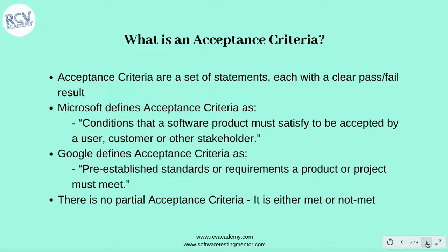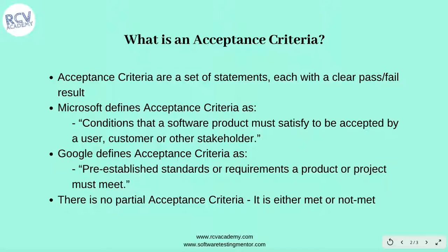Acceptance criteria are a set of statements, each with a clear pass/fail result. When you get a user story from your business analyst, he documents the requirements in the form of a user story based on discussions with stakeholders or business people. The business analyst then articulates those requirements as user stories and writes the acceptance criteria with clear pass/fail results, specifying what actions need to be performed and whether they should pass or fail.